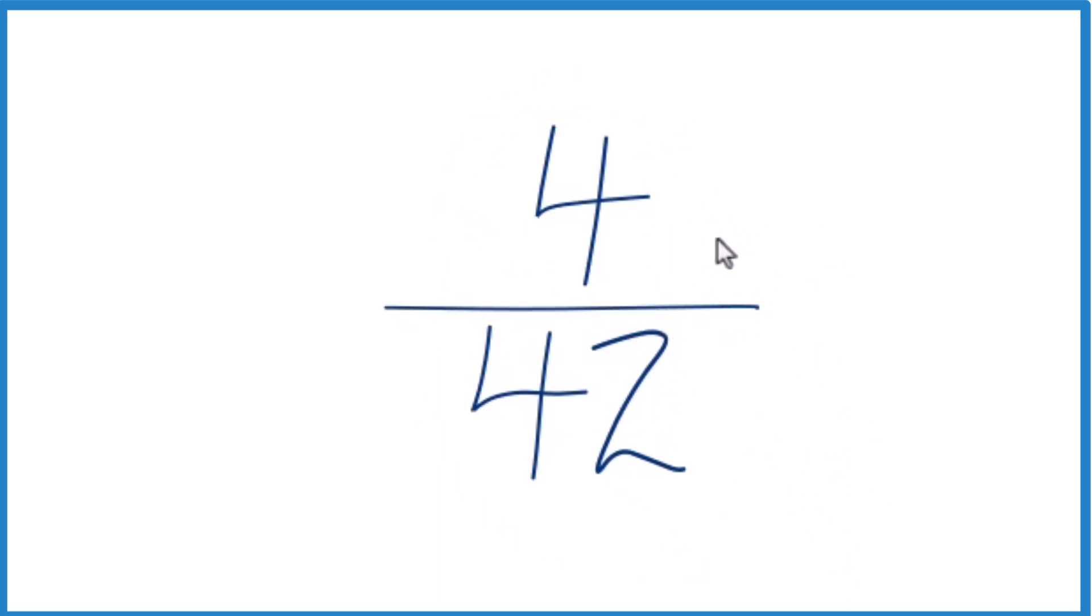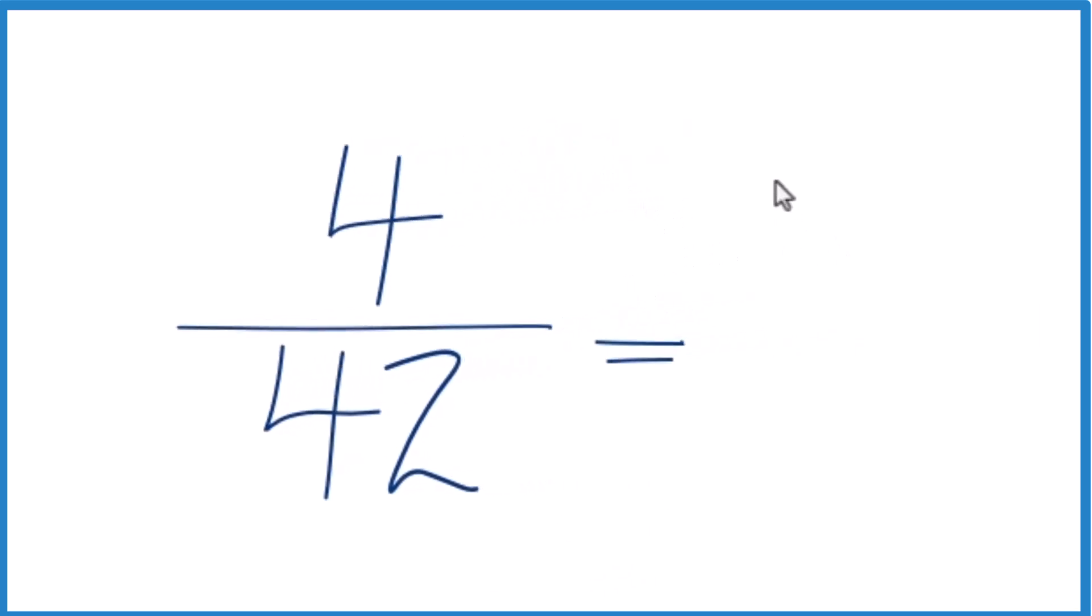Since they're both even numbers, I'm going to divide the numerator and denominator by 2. 4 divided by 2 gives us 2, 42 divided by 2 is 21, and we can't simplify 2 over 21 any further. It's in lowest terms.